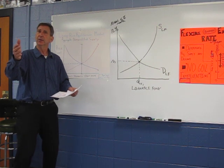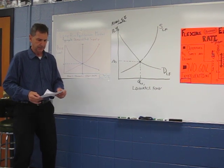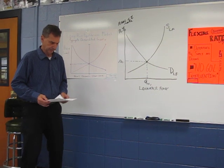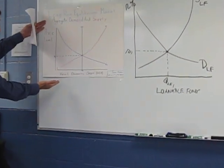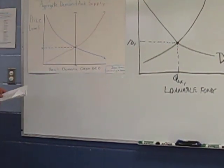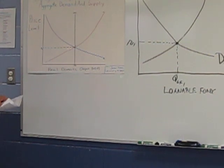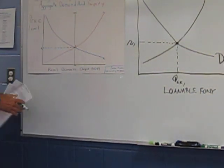The first question asks us to assume that the United States economy is operating at full employment using a correctly labeled graph of long run aggregate supply, short run aggregate supply and aggregate demand, show each of the following: current price level labeled PL and current output level labeled Y1.